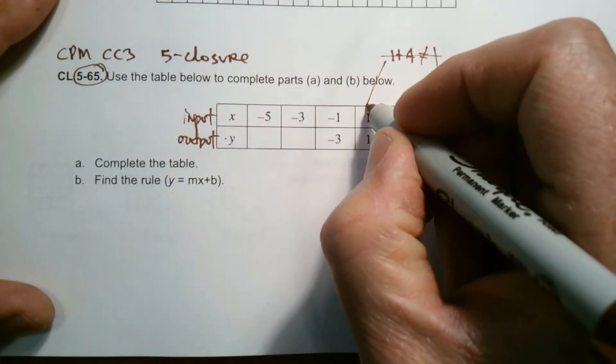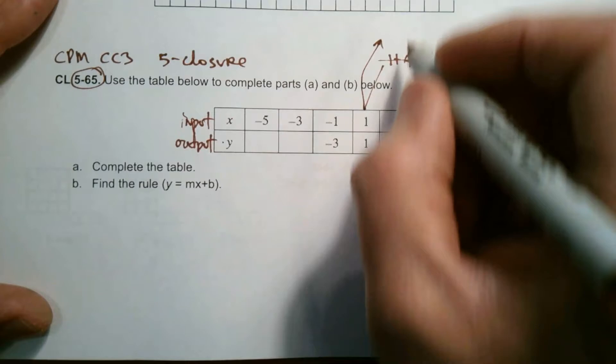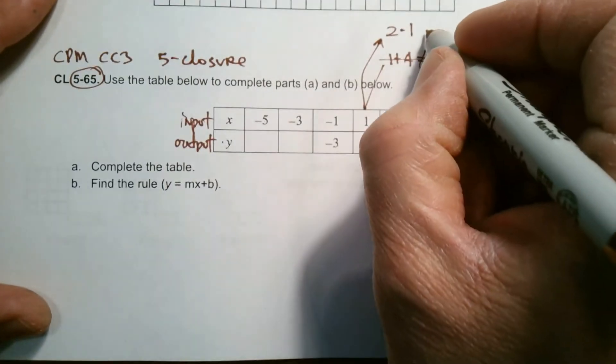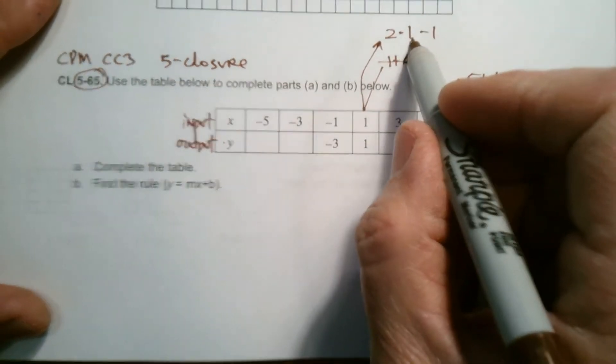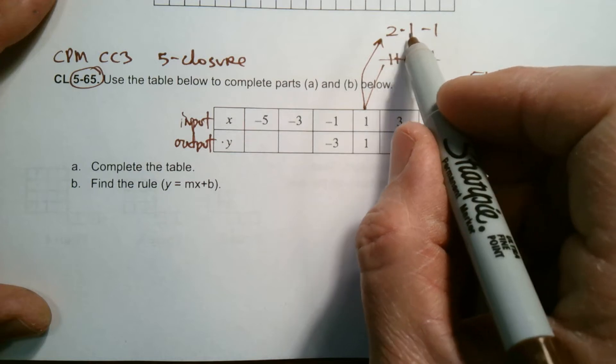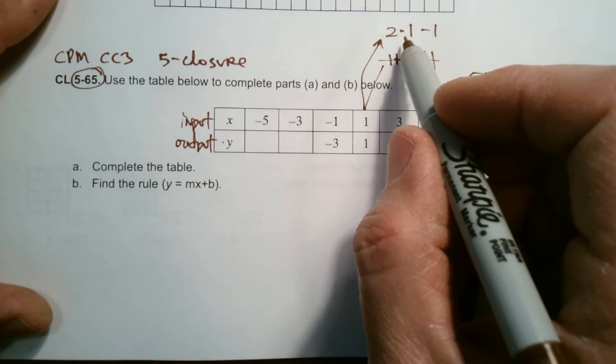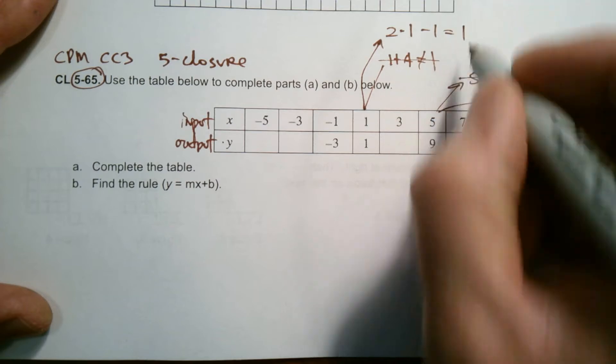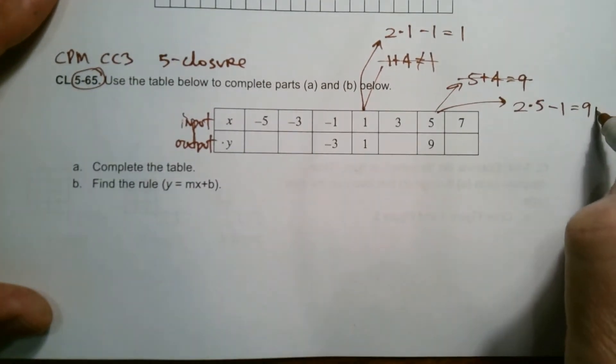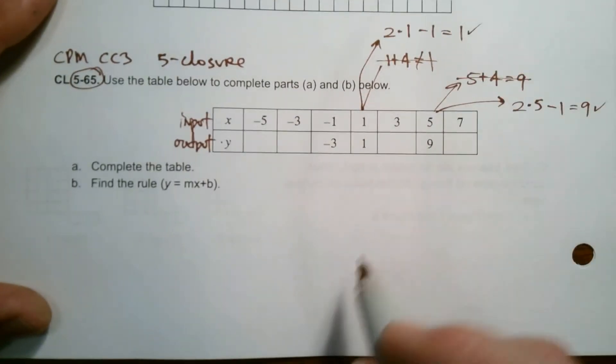So let's check that with the one. With the one then two times one minus one, two times one is two. And then two minus one equals one. It does, it works. So it worked for this one. It works for this one. That's most likely the pattern, but just to double check, they give me this one here. So let's check that one.